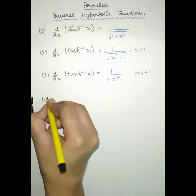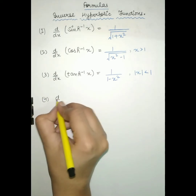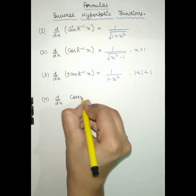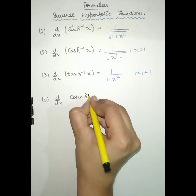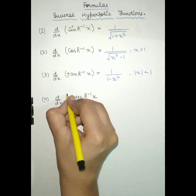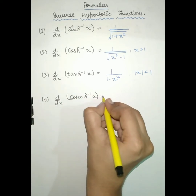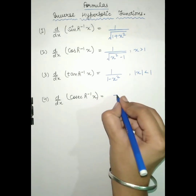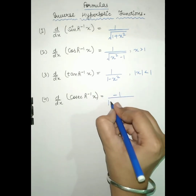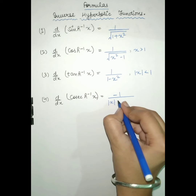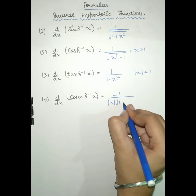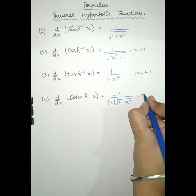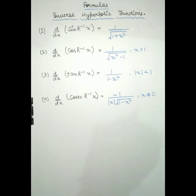Fourth is the derivative of cosecant hyperbolic inverse x, which will be equal to minus 1 upon mod of x into root of 1 minus x square, where x is not equal to 0.